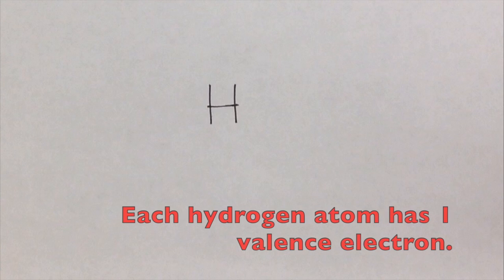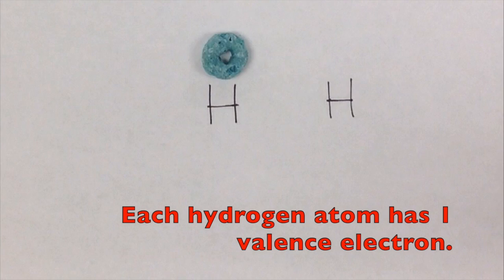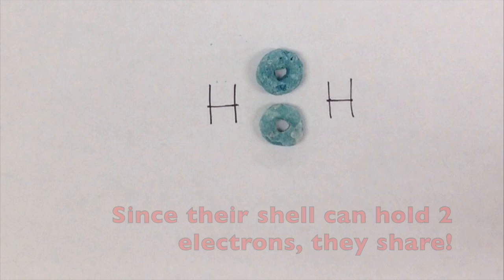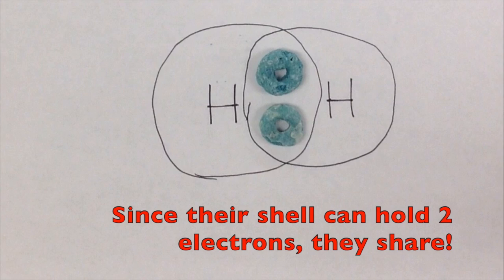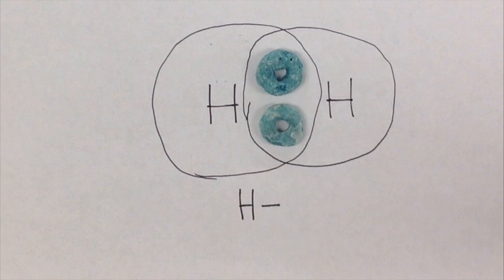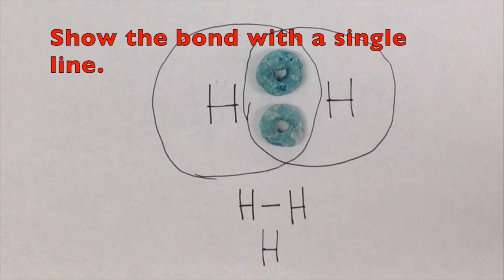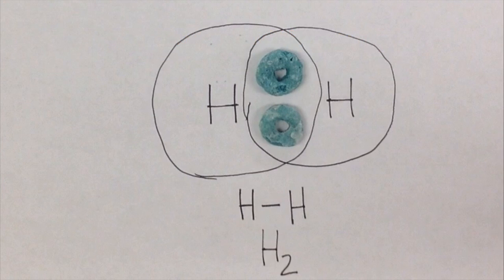Covalent bonding is sharing electrons, so let's start with hydrogen. It has one valence electron — each one has it. They decide to share electrons because their shell can hold two. Show the bond with a single line.